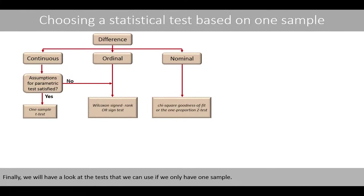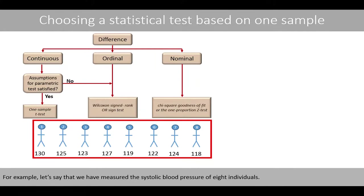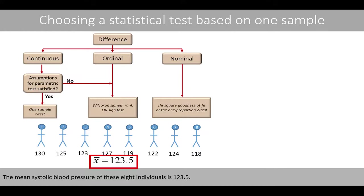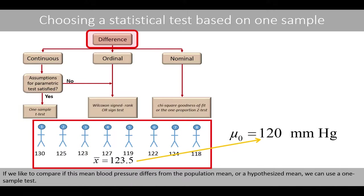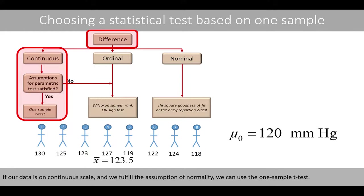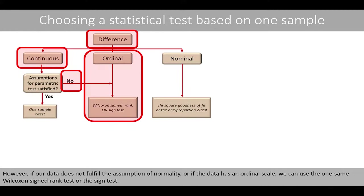Finally, we look at tests that can be used if we only have one sample. For example, if we have measured the systolic blood pressure of eight individuals with a mean of 123.5, and we'd like to compare if this blood pressure differs from a population mean or a hypothesized mean, we can use a one-sample test. If our data is on continuous scale and we fulfill the assumption of normality, we can use the one-sample t-test. However, if our data does not fulfill the assumption of normality, or if the data has an ordinal scale, we can use the one-sample Wilcoxon signed-rank test or the sign test.